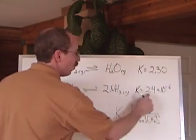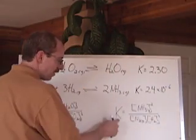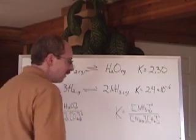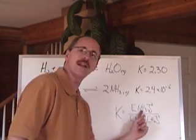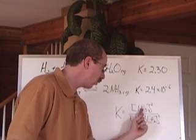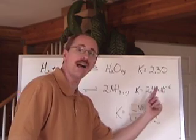Now, take a look at this one. 2.4 times 10 to negative 6, if that's the K value for this reaction here, and this expression, then that means then that the numerator is less than the denominator. The denominator must be quite large and the numerator quite small to give us such a low value.